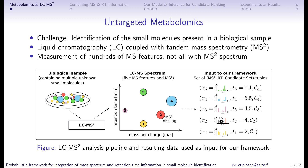In untargeted metabolomics, a challenging task is the identification of the small molecules present in a biological sample. Liquid chromatography coupled with tandem mass spectrometry, so-called LC-MS or LC-MS2, is a popular tool for the analysis. Typically we measure hundreds of MS features where some have MS2 and some might not have an MS2.